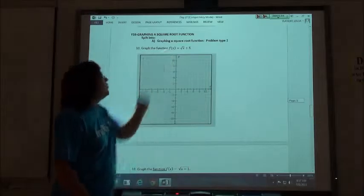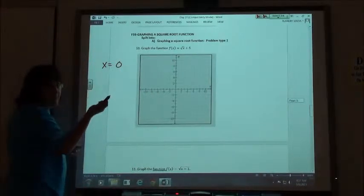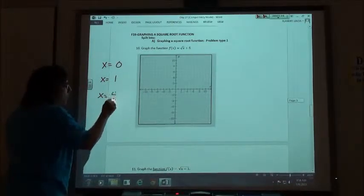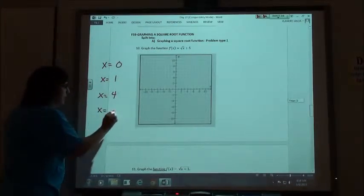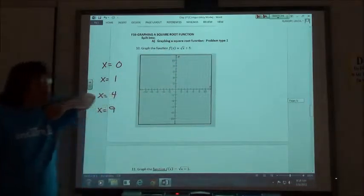In this case, we just have an x under the square root. So we're going to say, okay, x has to equal 0, which is my first perfect square, 1, 4, which is 2 squared, and 9. Didn't have to do much to solve those because I only had just the plain x under there.